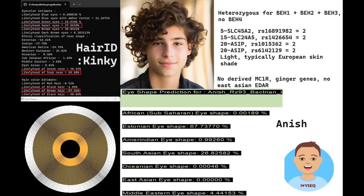Anish is quite a lot lighter. He's got two draft variants in all the SLC45A2 and SIEP variations, giving him lighter, typically European skin shade. He doesn't have any draft variants in MC1R related to ginger hair, and no East Asian EDAR. He's heterozygous for BEH1, BEH2, and also BEH3 — blue eye haplotype 3 — which is a very northern European blue eye mutation. Nashakot predicts him to have brown or hazel eyes, with even a 21.2% possibility of blue eyes with an amber center.